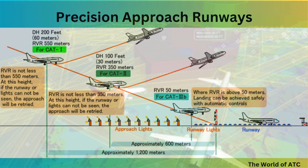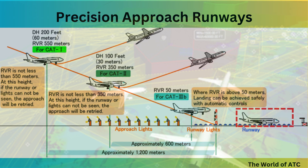However, if it is a CAT-3 Charlie runway and the pilot does not get visual with any visual reference — any approach light, any marking, even the runway itself — nothing is required: no decision height, no RVR. The pilot can still land the aircraft safely.